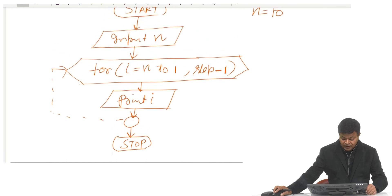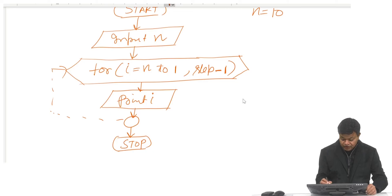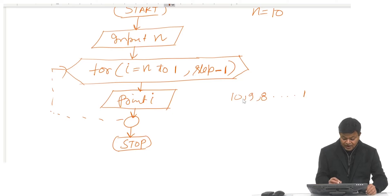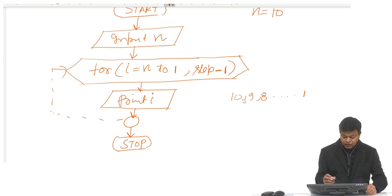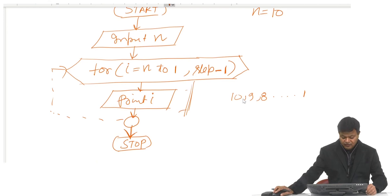If n equals 10, for i equal to 10 to 1, step minus 1 — first time printing 10, then since step is minus 1 i becomes 9, printing 9, then 8, and so on until printing 1. After that, 1 minus 1 equals 0, so i becomes 0, which is less than 1, so I come out of the loop and stop.